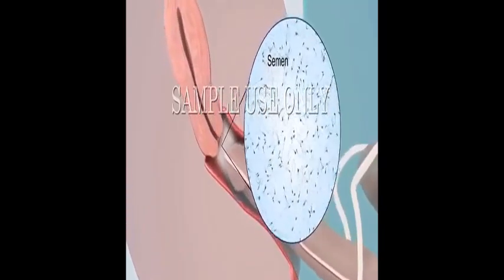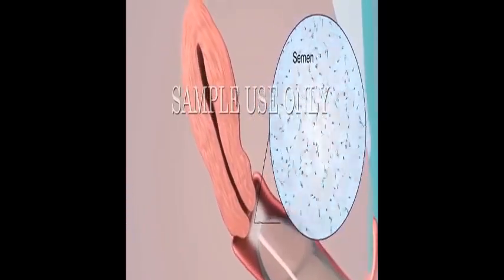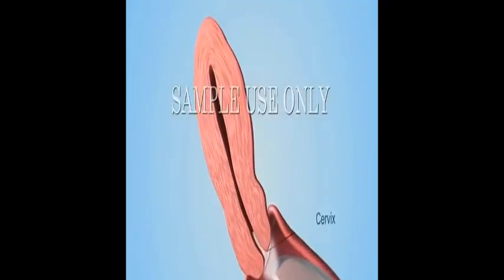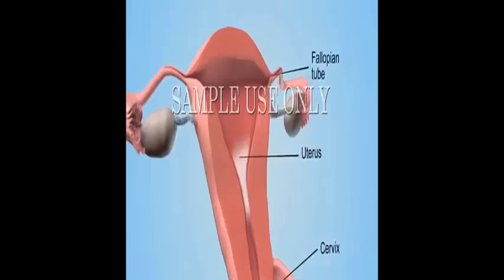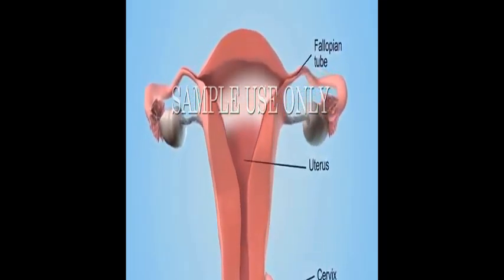Semen contains tens of millions of sperm. From the vagina, sperm can pass through the cervix, uterus, and fallopian tubes to fertilize an egg from the woman's body.